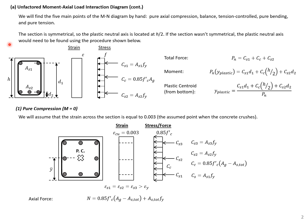The first step is to find the plastic neutral axis for our section. Because our section is symmetrical, our plastic neutral axis is simply h over 2. For a non-symmetrical section, we would find the total force and take forces times lever arms from either the bottom or top, then divide by the total force. For our symmetrical section, the plastic neutral axis is at the centroid, h over 2.